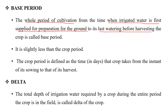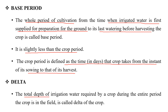The base period is the time we are going to cultivate a crop. The crop period is defined as the time that the crop takes from the instant of its sowing to that of its harvest, calculated in days. The next term is delta. The total depth of irrigated water required by a crop during the entire period of the crop in the field is called delta of the crop.